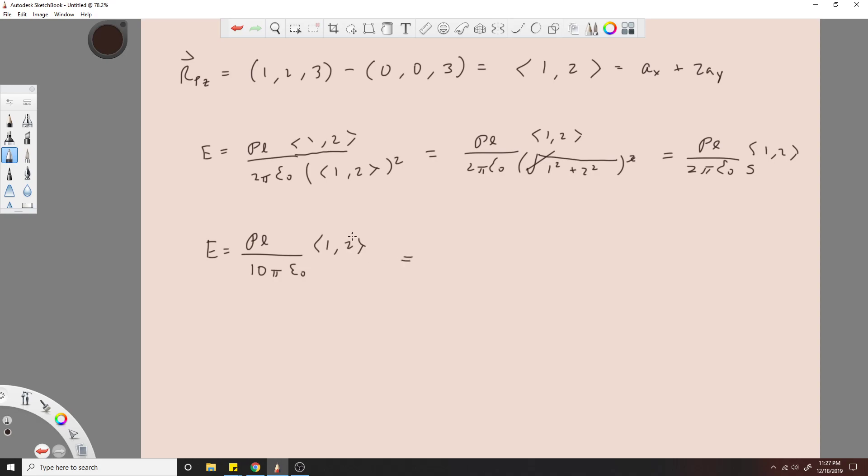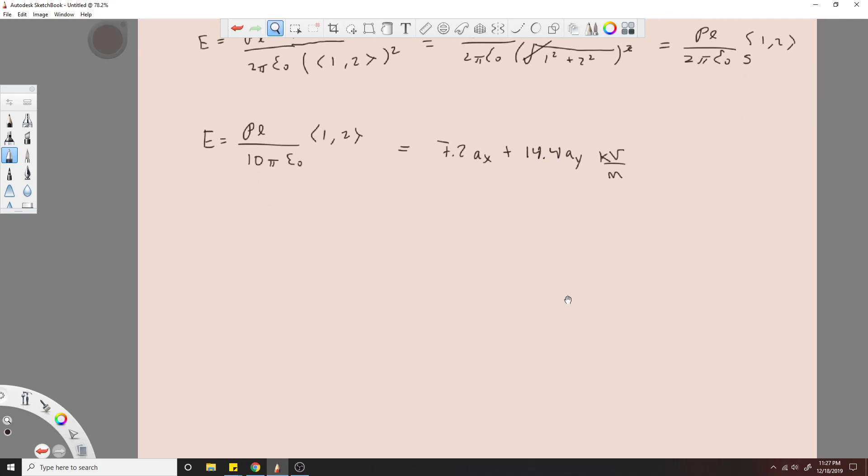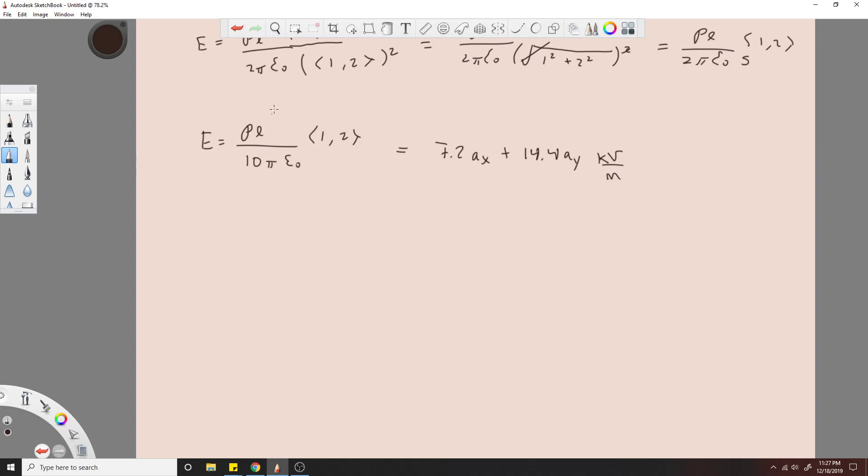rho L over 10 epsilon naught, and then 1 and 2. And when you actually solve these numbers, you'll end up with 7.2 ax plus 14.4 ay kilovolts per meter. Because you have all these numbers, you just have to plug this in for 2 microcoulombs, plug in your epsilon value, and you get your number.